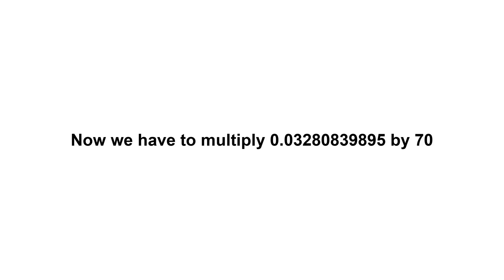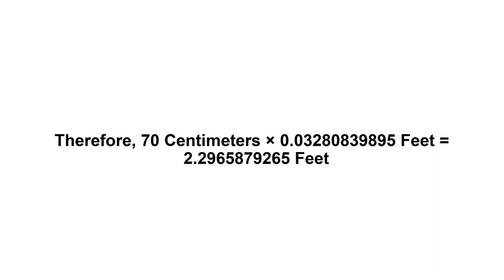Now we have to multiply 0.03280839895 by 70. Therefore, 70 cm x 0.03280839895 feet equals 2,965,879,265 feet.